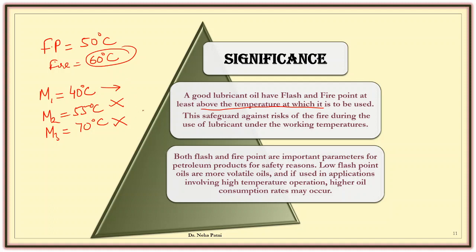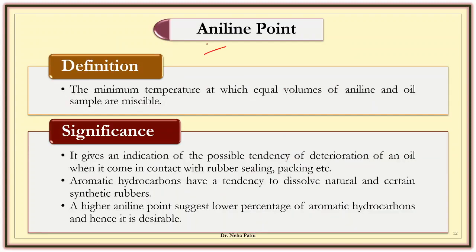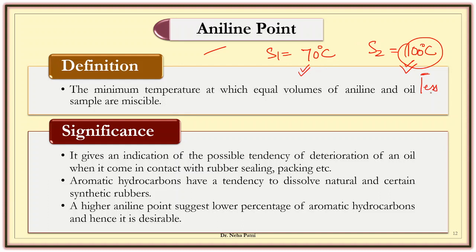Flash and fire point are very important parameters for machines working at higher temperature operation that have a risk of a source of flame. Coming to aniline point — it is the temperature at which equal volumes of aniline and oil are miscible and get mixed. If sample one gives an aniline point of 70 degrees and sample two gives 100 degrees, sample two is not easily mixed — it takes a higher temperature to mix, meaning it has less aromatic content. Aniline point tells you the tendency of deterioration or aromatic hydrocarbons present. If a higher aniline point is there, then a lower percentage of aromatics is present, which is desirable because aromatic contents are carcinogenic, corrosive, and not good for health. So select the oil with a higher aniline point as a lubricant.